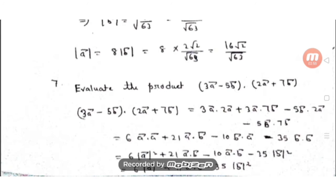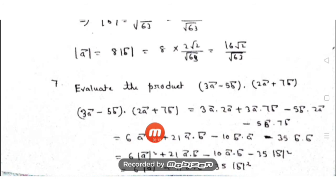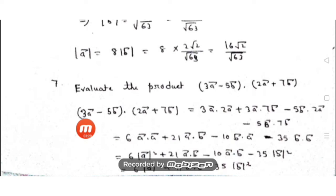Question number 7: evaluate the product (3a - 5b)·(2a + 7b). We simply apply the distributive law. Multiplying out: 3a·(2a + 7b) - 5b·(2a + 7b). Don't forget to include the dot symbol — it is very important in the case of vectors.